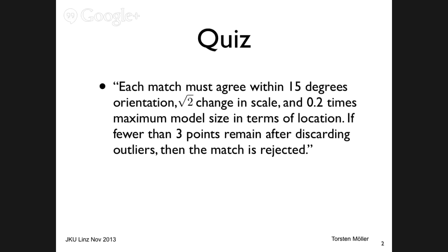I'm showing you a quote from a very famous research paper. The quiz is: which paper is it? The quote reads: 'Each match must agree with 15 degrees orientation, square root of two change in scale, and 0.2 times maximum model size in terms of location. If fewer than three points remain after discarding outliers, then the match is rejected.' It has more than 25,000 citations and it's in computer vision.